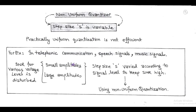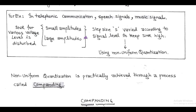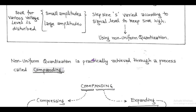In these practical examples such as telephone, speech signals, and music signals, there are various voltage levels including small as well as large amplitudes. Due to this, signal-to-noise ratio is disturbed. In order to improve signal-to-noise ratio, the step size S is varied according to the different signal levels. So here, non-uniform quantization is applicable. In non-uniform quantizer, step size is a variable parameter and is generally used in telephone communication systems.